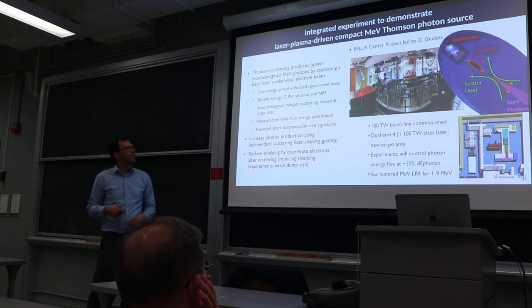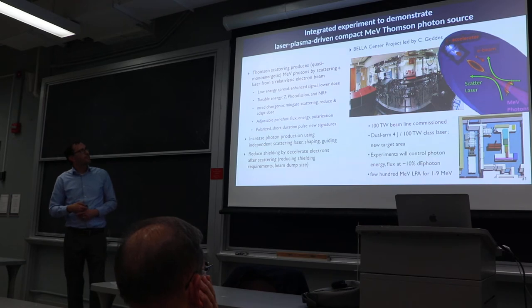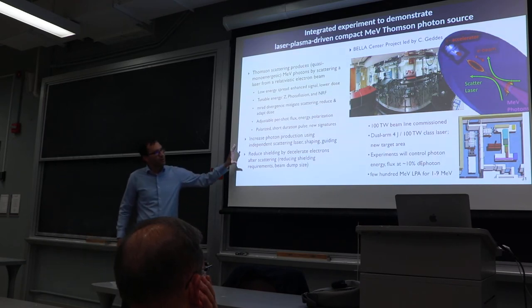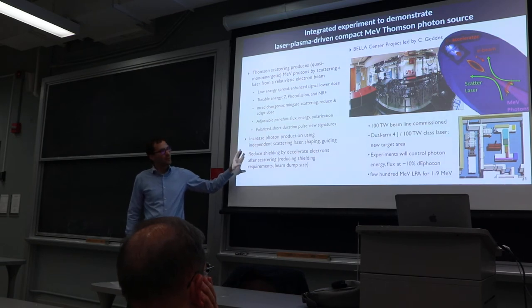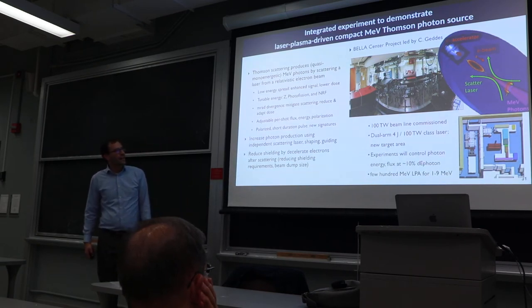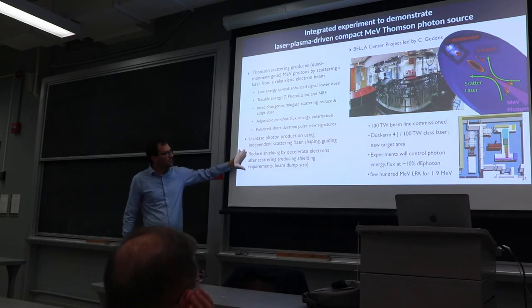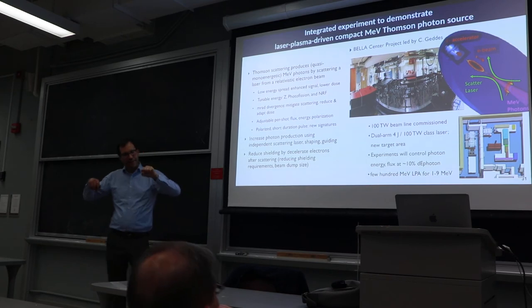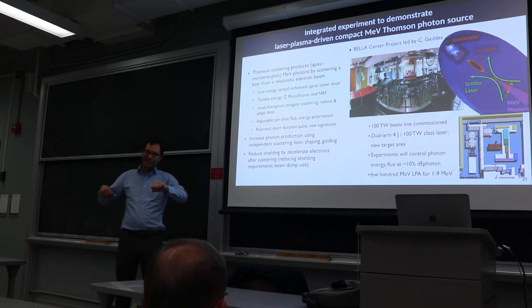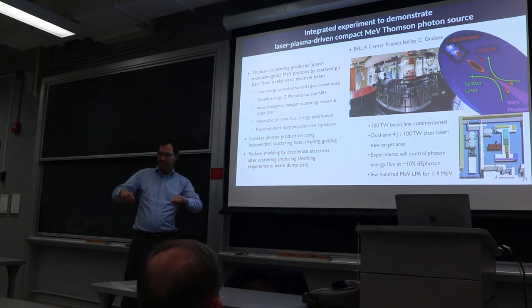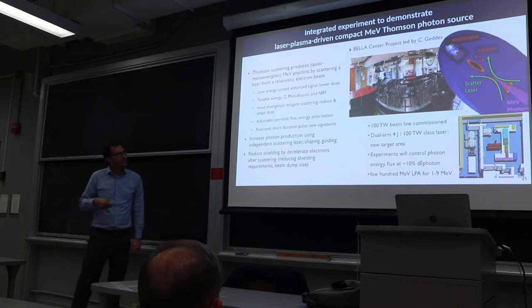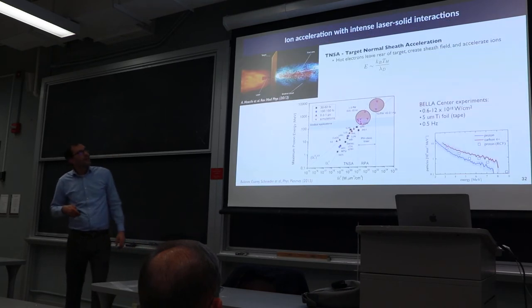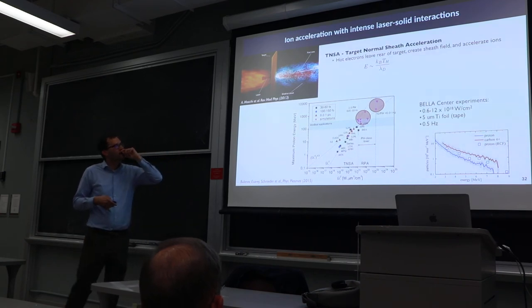You can use that to characterize material. What this project is really after is something really compact and portable in that 1 to 9 MeV gamma ray range. To reduce the shielding requirements and make it really portable, you can imagine having a second plasma accelerator stage decelerate the beam after the scattering. You have one stage accelerate, scatter in between, and then a second stage decelerate, which greatly reduces the shielding requirements.